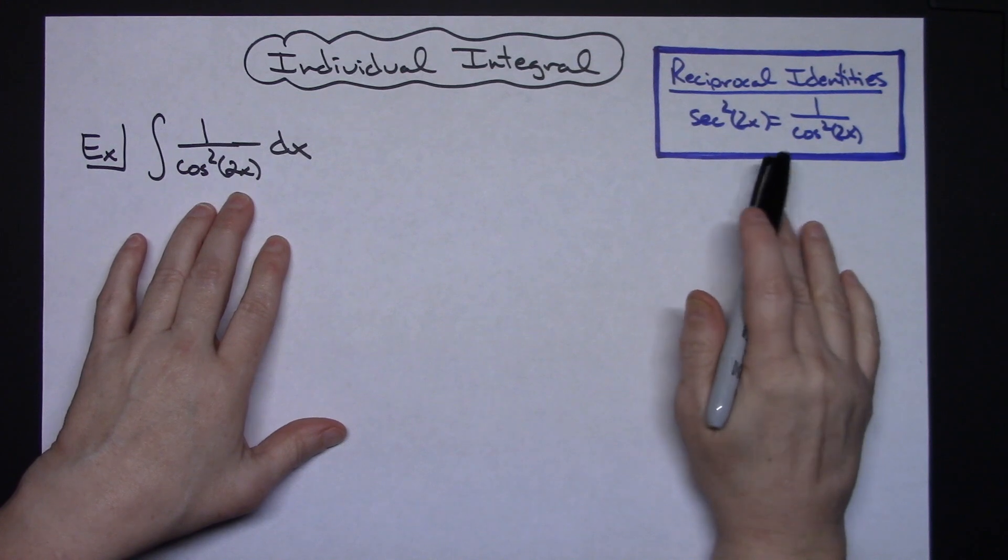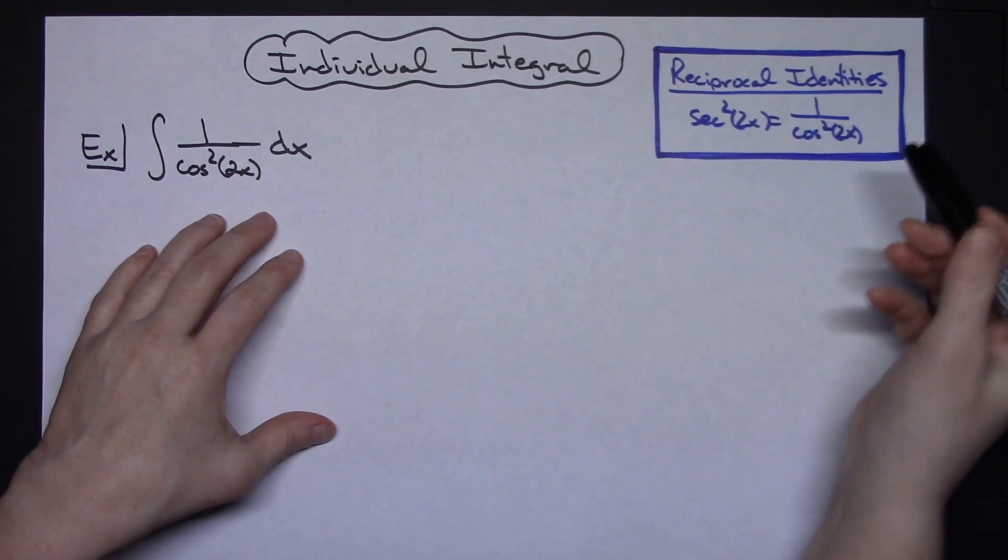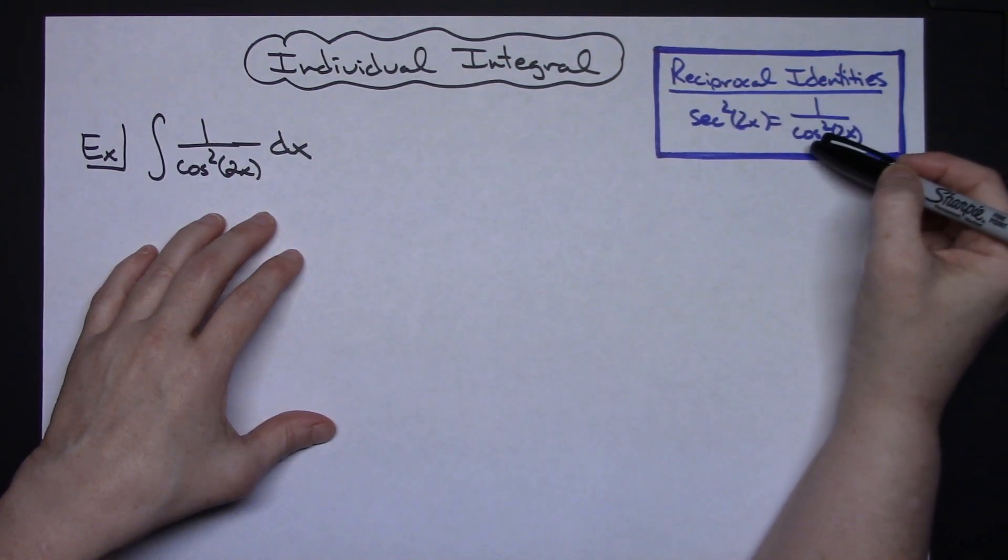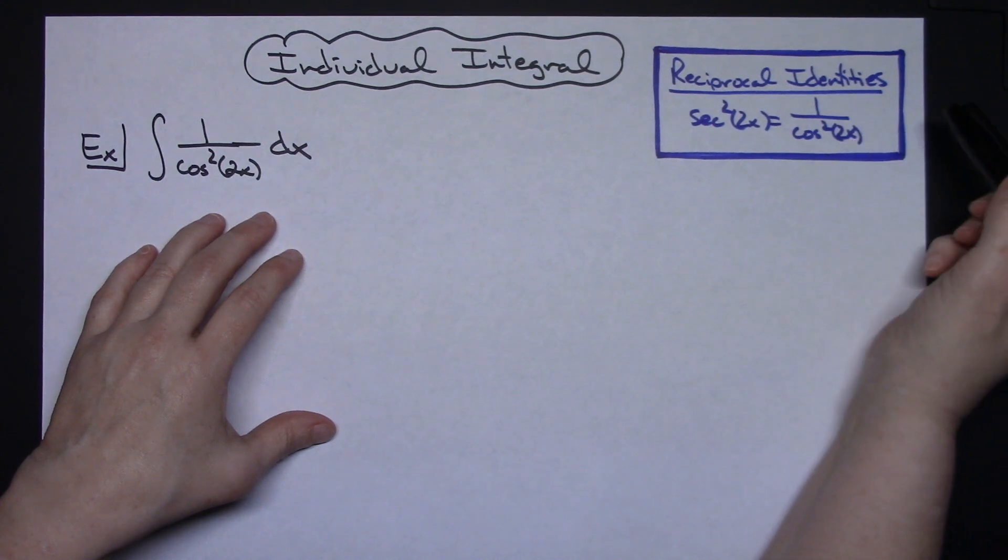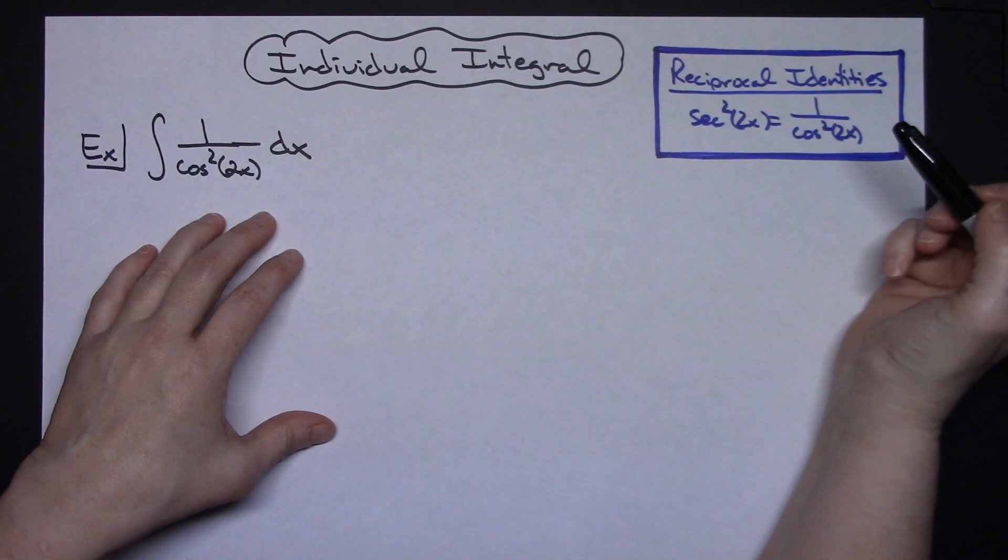Before we start here, I might want to point out that it's going to be very helpful if you know your reciprocal identities. 1 over cosine is equal to secant, so 1 over cosine squared of 2x would equivalently be equal to secant squared of 2x.